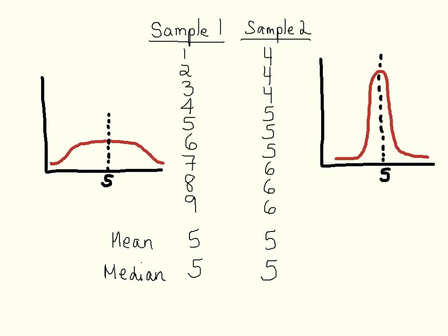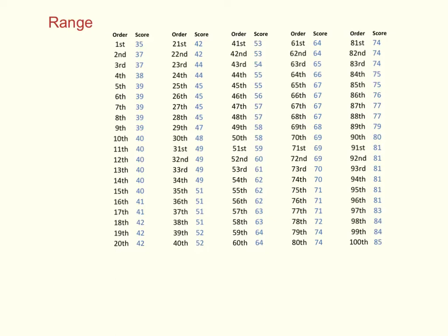Now we're going to talk about different measures of variation. Here's a data set we're going to use — it has 100 values with scores on each. You can think of this as scores on a quiz. Each score is ranked in order, so this is the first score, meaning the lowest, all the way to the hundredth, which is the highest score.